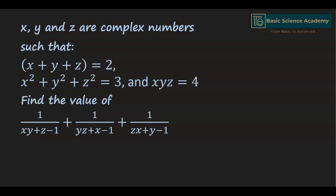In this video we are going to solve the question: x, y, and z are complex numbers such that x plus y plus z equals 2, x squared plus y squared plus z squared equals 3, and xyz equals 4. Find the value of 1/(xy + z - 1) + 1/(yz + x - 1) + 1/(zx + y - 1).